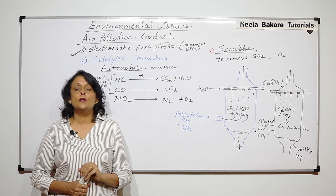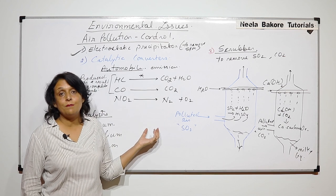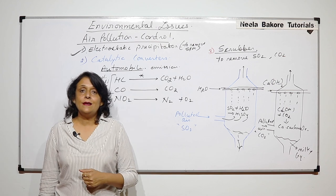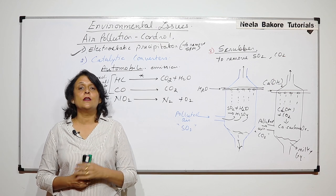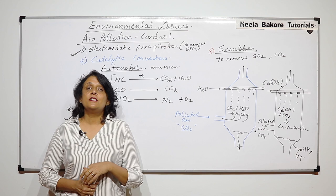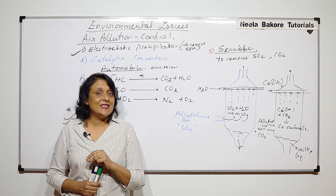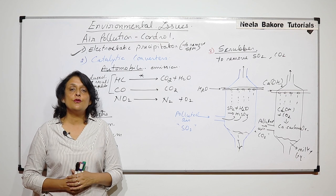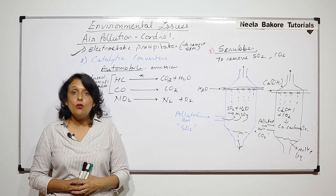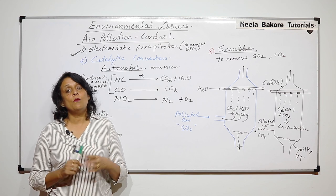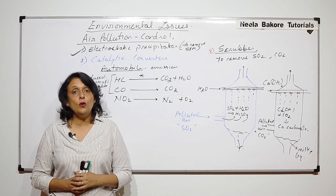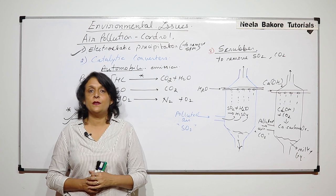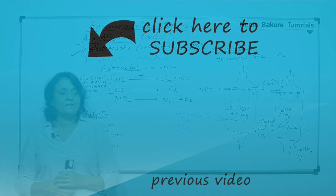From automobiles, air pollution is maximum. The government has introduced certain norms known as BS norms. Earlier we used to follow Euro norms, and we will also discuss why we are shifting to clean fuel like CNG. All these things will be taken up in the next video. Thank you.